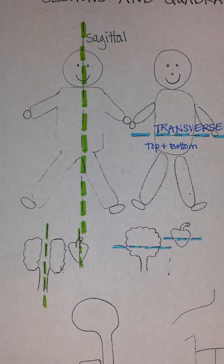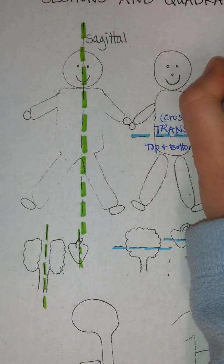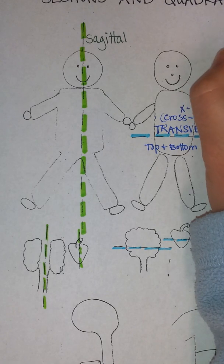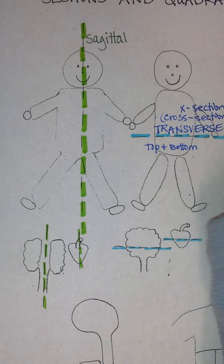Sometimes transverse sections are also called cross sections. And if you're looking at a histology slide, sometimes they just write it like this. Cross section.